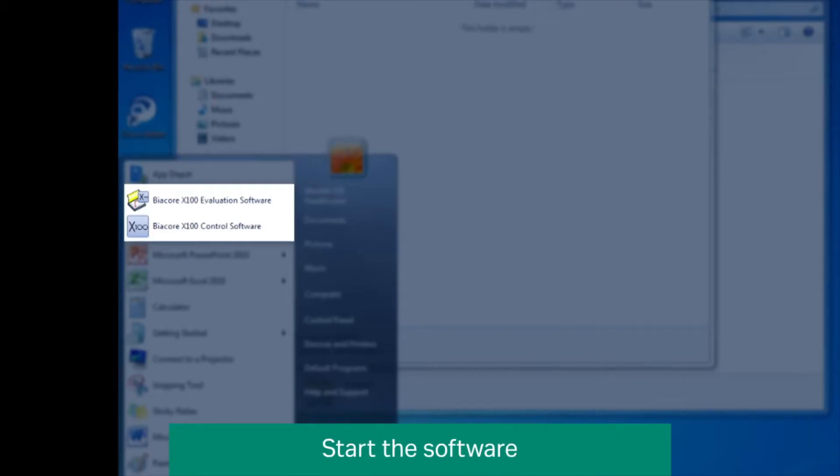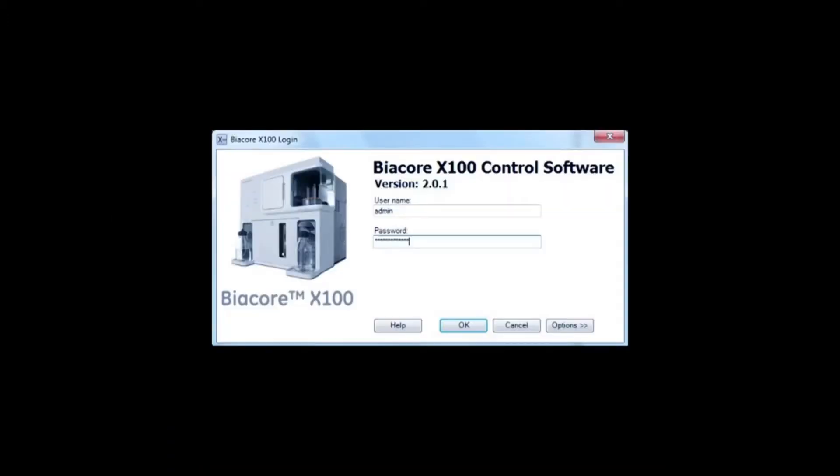Start the Beacore X100 control software from the Windows Start menu. Click on the Beacore X100 control software icon. In the login dialog, enter your username and password and click OK.